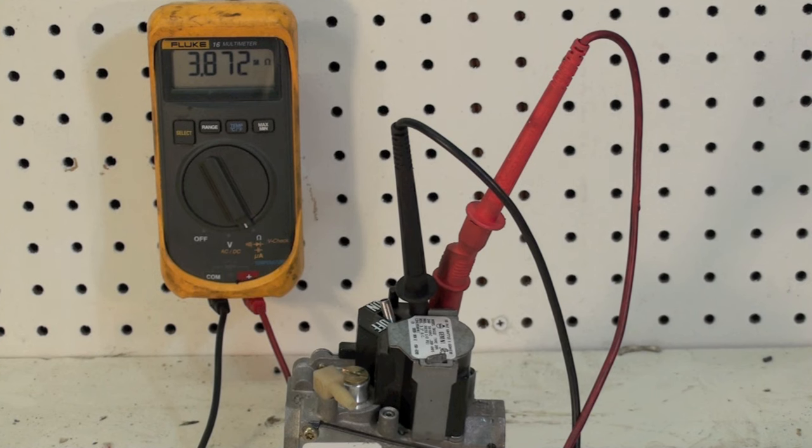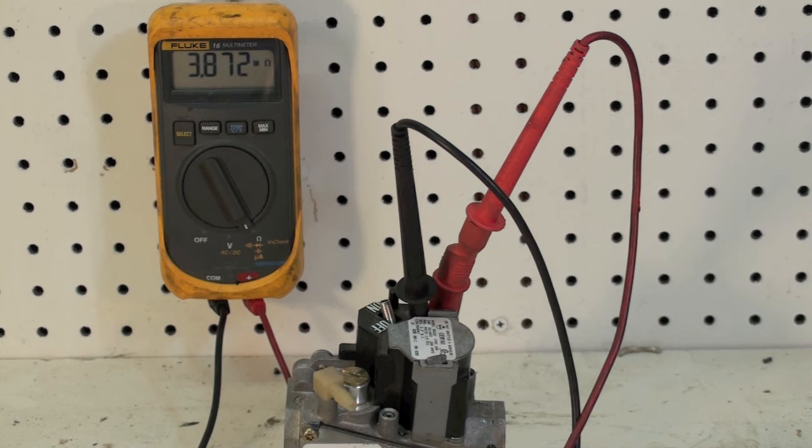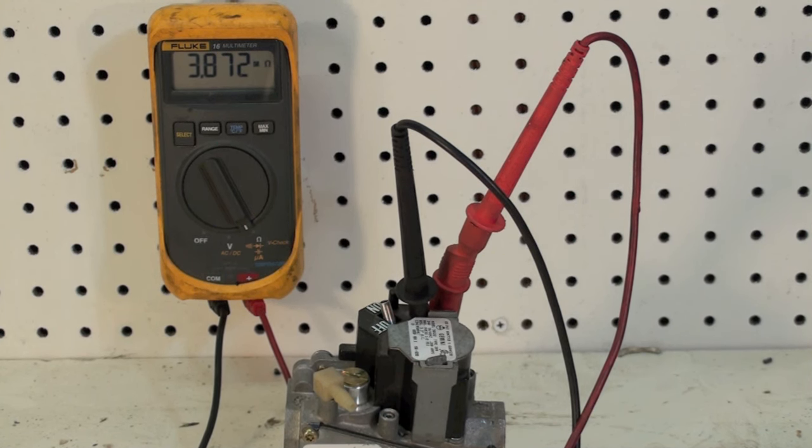On this one I've got the solenoid hooked up to the ohmmeter and I'm reading 3.872 megaohms. So obviously that's a bit high.